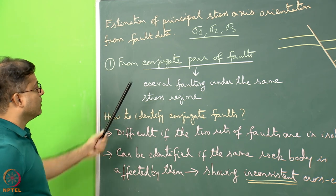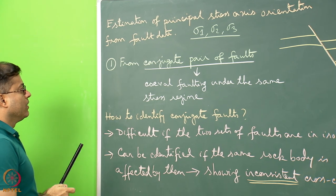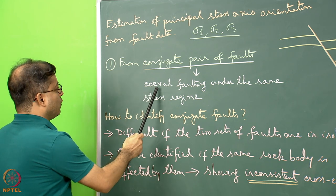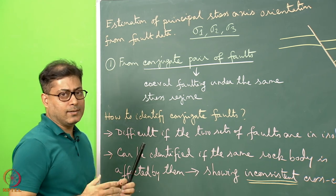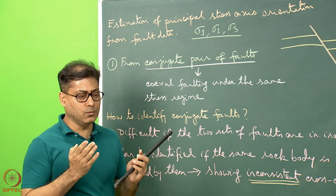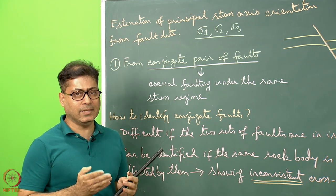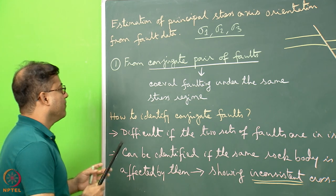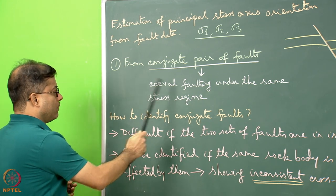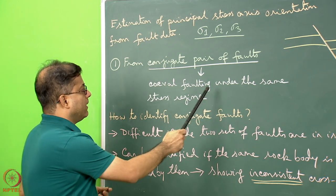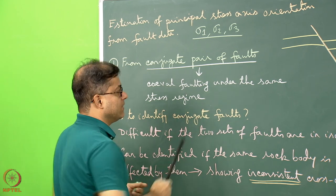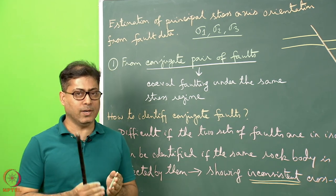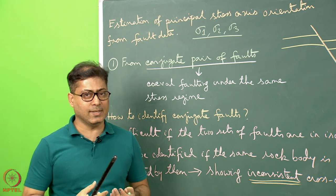What is the meaning of the term 'conjugate pair of faults'? Conjugate faults are faults that are co-eval — meaning the two fault planes activated at almost the same geological time. This is co-eval or simultaneous faulting that happened under the same stress regime, so the stress regime for both sets must be the same.